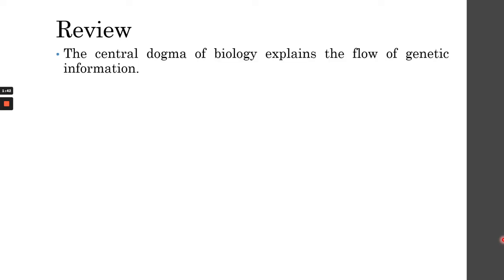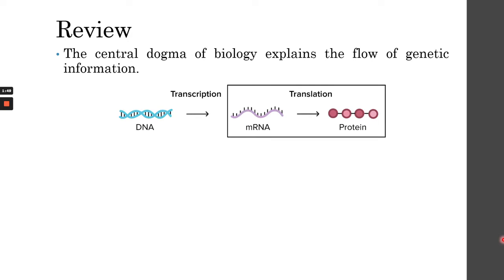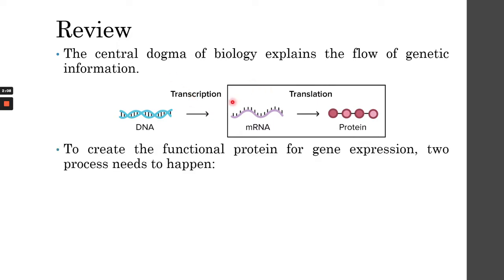Let's have a quick review of our previous discussion about transcription. The central dogma of biology explains the flow of genetic information. We start from DNA, then create an mRNA, which is a copy of a sequence of the DNA — that's the process called transcription. Today we are discussing the last part, which is translation, to create the final protein for our gene expression — the functional product that gives us the phenotype or physical characteristics stored in our DNA.